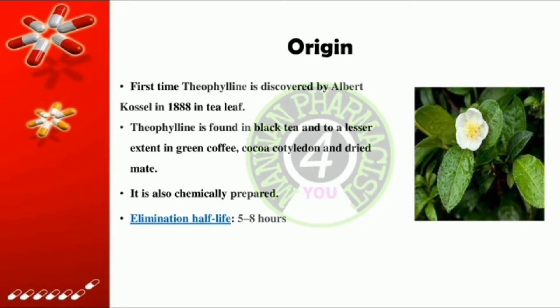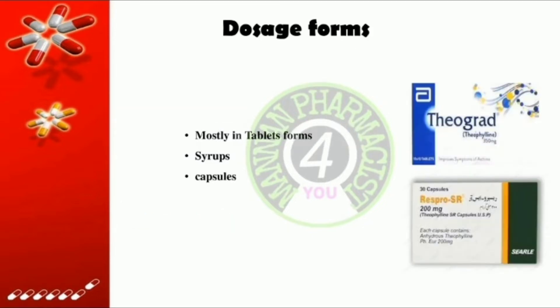Now I will discuss the origin of theophylline — that is, what is the source of theophylline. Theophylline was first discovered by Albert Kossel in 1888 in tea leaves. It is found in black tea and, to a lesser extent, in green coffee, cocoa cotyledon, and dried maté. It is also chemically prepared. The elimination half-life is five to eight hours.